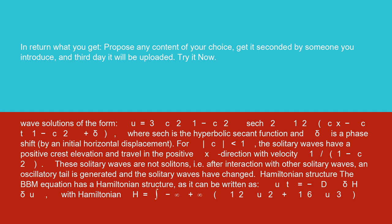For c less than 1, the solitary waves have a positive crest elevation and travel in the positive x direction with velocity 1 over 1 minus c squared. These solitary waves are not solitons. That is, after interaction with other solitary waves, an oscillatory tail is generated and the solitary waves have changed.